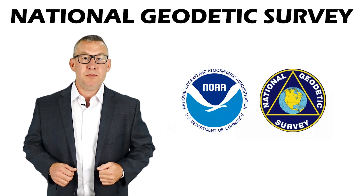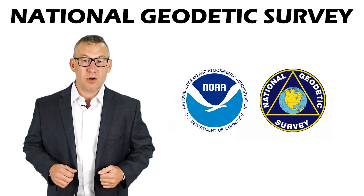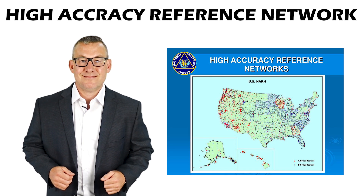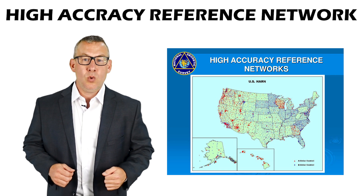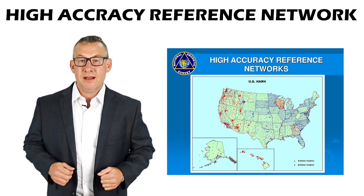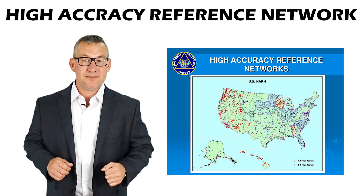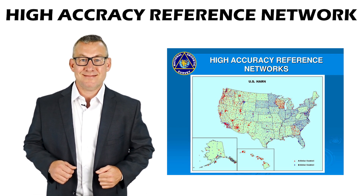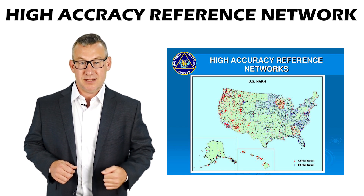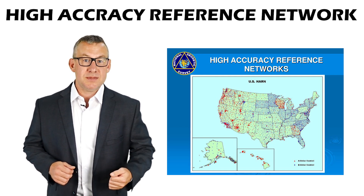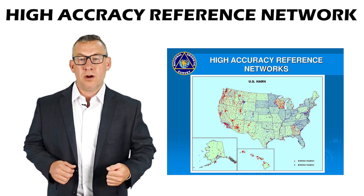The National Geodetic Survey maintains benchmarks for the High Accuracy Reference Network, or HARN. HARN consists of 16,000 survey stations across the U.S. and was created to upgrade NAD83 with high-precision GPS to improve accuracy. It is also known as the High Precision Geodetic Network and is used by state plane coordinate systems.